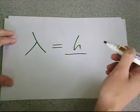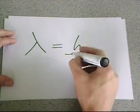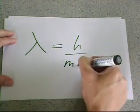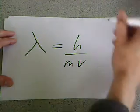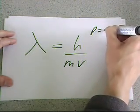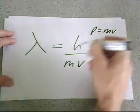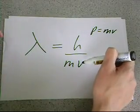It's a very small number, 6.63 times 10 to the minus 34, divided by the momentum of the particle. So remember, momentum is often given the symbol P. So you might see lambda equals H over P.